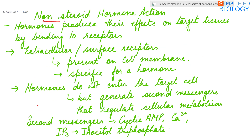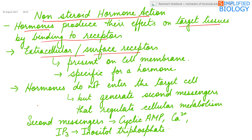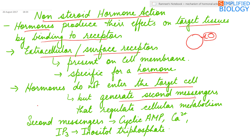Non-steroid hormones produce their effect on target tissues by binding to receptors. These receptors are extracellular or surface receptors — that means they are present on the cell membrane. These receptors are protein molecules specific for a hormone. The hormone binds to the receptor forming a hormone-receptor complex. The hormones are not able to enter the target cell, hence they generate second messengers that regulate cellular metabolism. Second messengers include cyclic AMP, calcium ions, and inositol triphosphate.